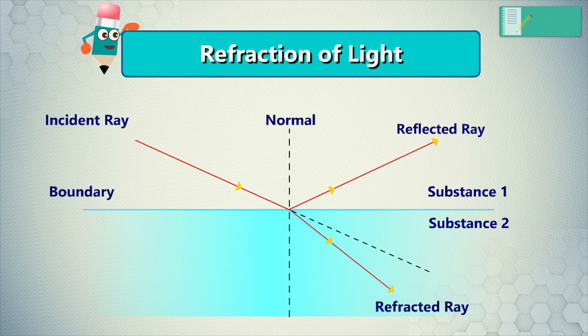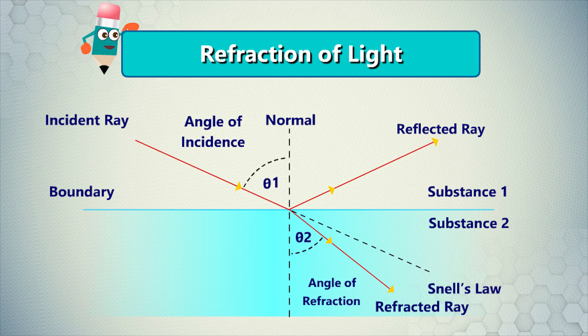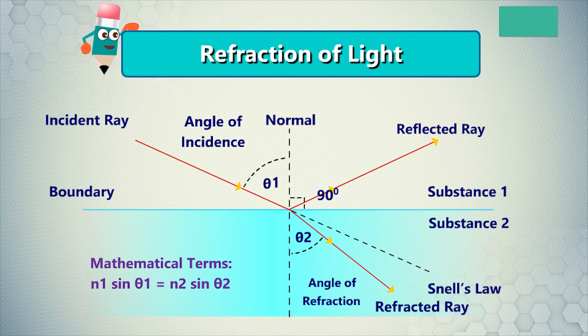The law of refraction also known as Snell's law. This law describes the relationship between the angle of incidence, theta 1, and the angle of refraction, theta 2. Measured with respect to the normal perpendicular line to the surface, in mathematical terms, N1 sine theta 1 equals N2 sine theta 2.